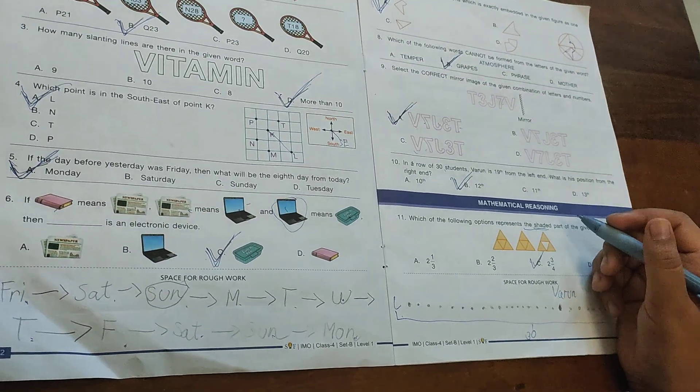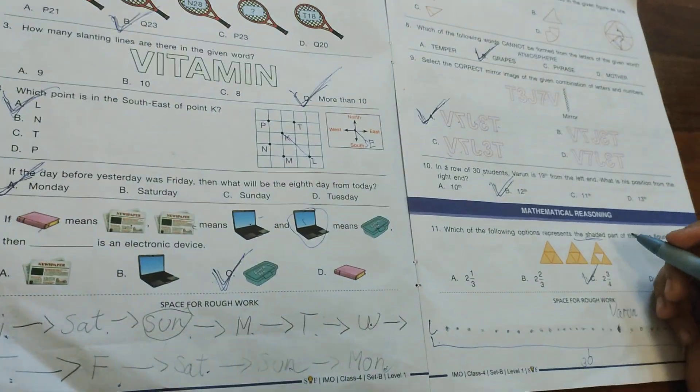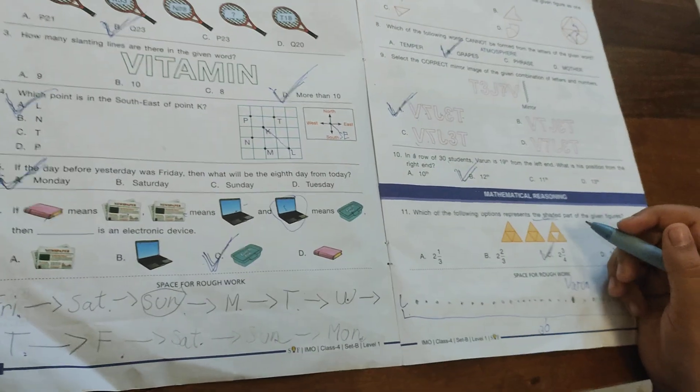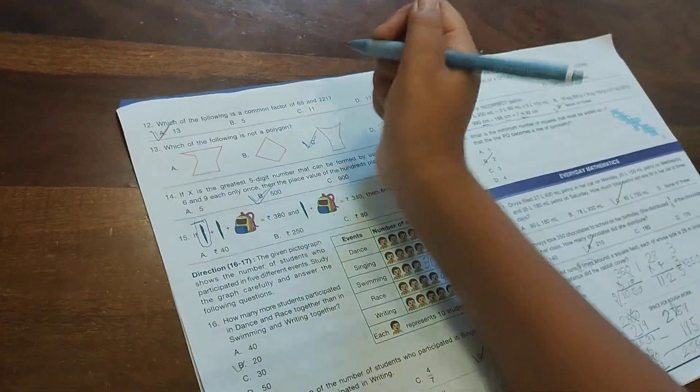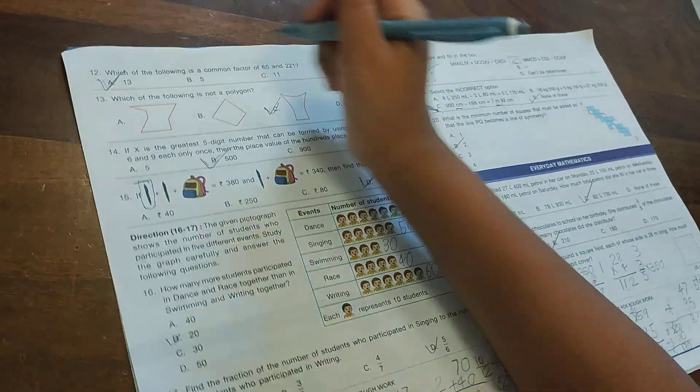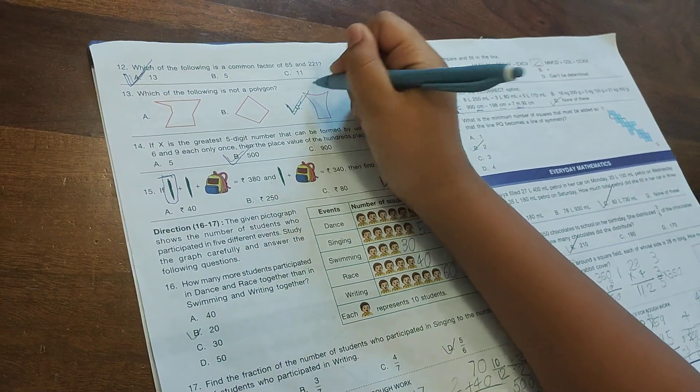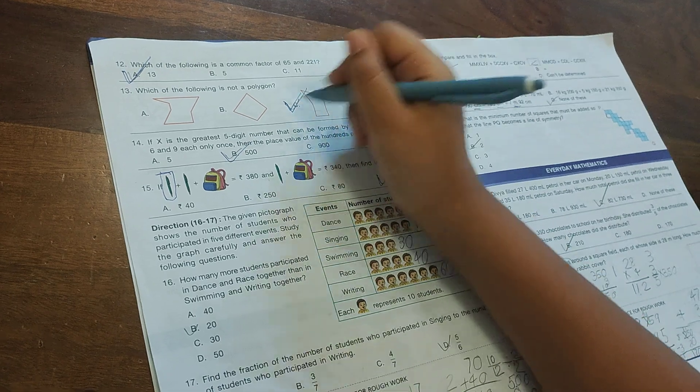Now we have come to mathematical reasoning. Which of the following options replaces the shaded part of the given figure? Option showing 2 3/4, which is a mixed number. Which of the following is a common factor of 65 and 221? It's 13. Which of the following is not a polygon? Option C, because it has curved lines.